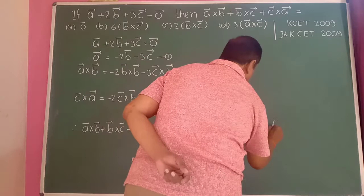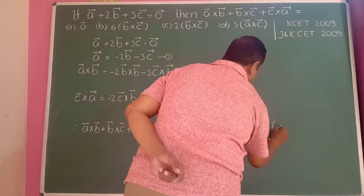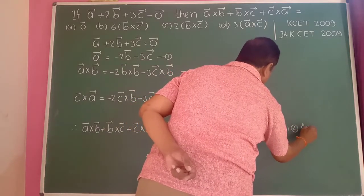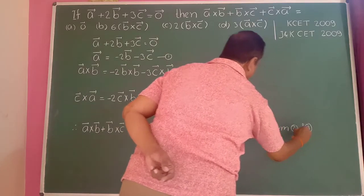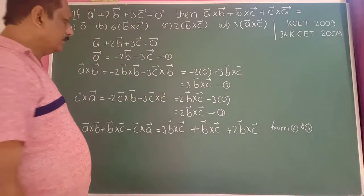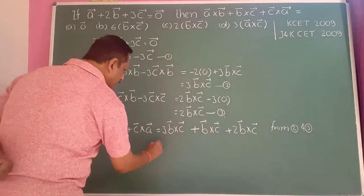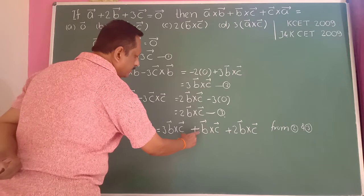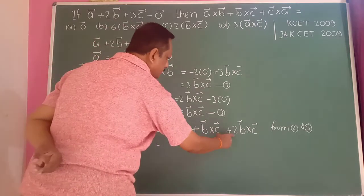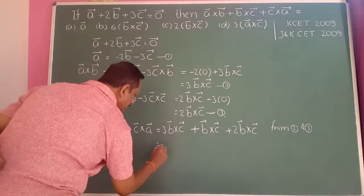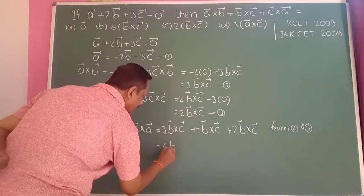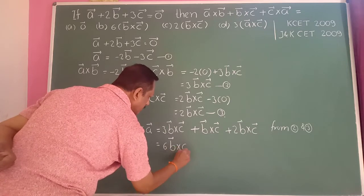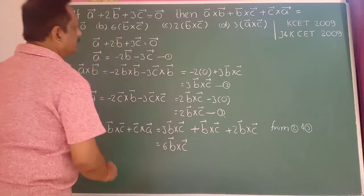From equations 2 and 3, substituting: 3 plus 1 is 4, plus 2 gives 6. So the result is 6 into b-bar cross c-bar. Therefore option B is the correct answer: 6 into b-bar cross c-bar.